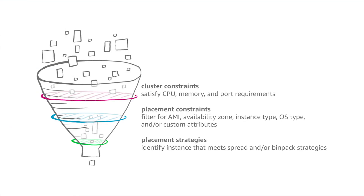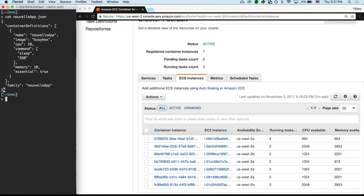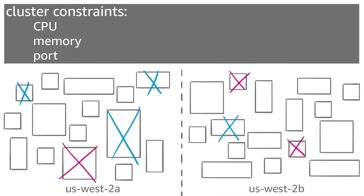The instance selection process can be viewed as a funnel with layers of filters. All the instances go in and only one comes out. Initially, we start off with all the instances in our cluster. We can then use the AWS CLI or the AWS console to run a task — I'll be using the CLI. First, we need a task definition file to create a task. Here's a simple example. Any instances which don't meet our memory, CPU, or port requirements are removed. Now we get into the task placement engine, where we either stick with the defaults or choose to set task placement constraints and strategies.